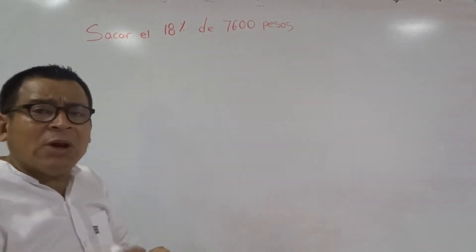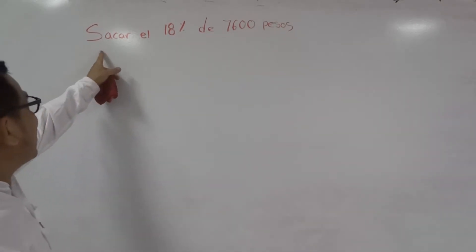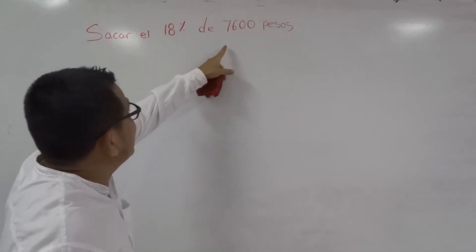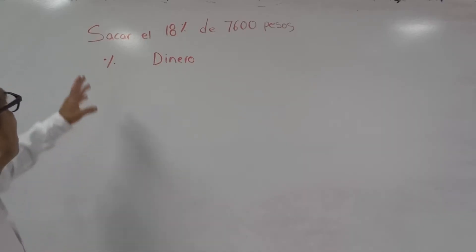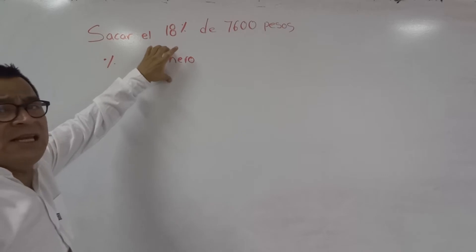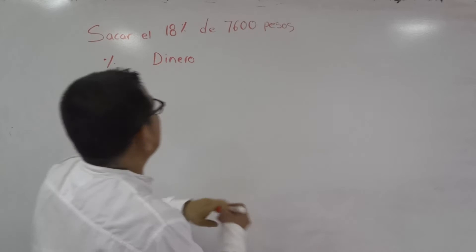Trabajamos con la regla de 3 para hacerlo más fácil, rápido y sencillo. Saca el 18% de 7600, ok comenzamos. Ponemos porcentajes y dinero. Dónde está el dinero: 7600 pesos.